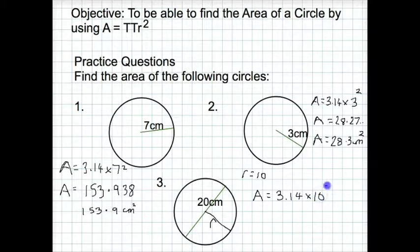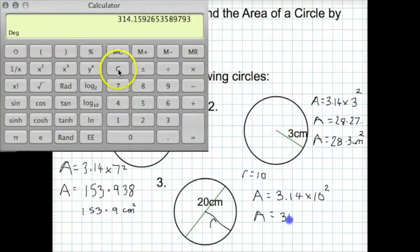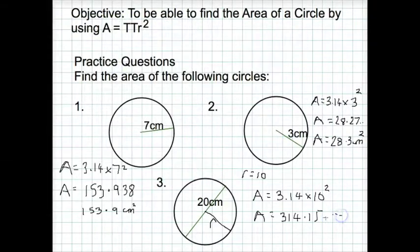If we type that in a calculator, π times 10 squared gives us 314.159 continuing on. Rounding to one decimal place gives us 314.2 centimeters squared.